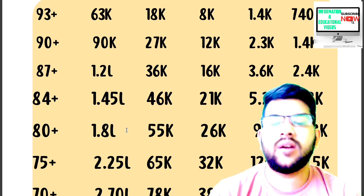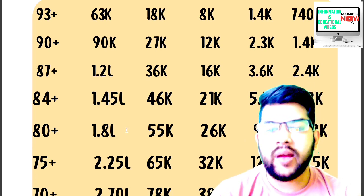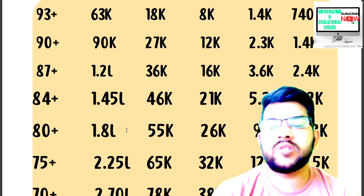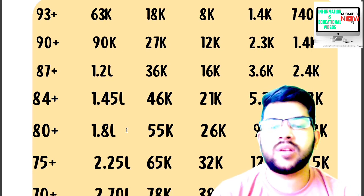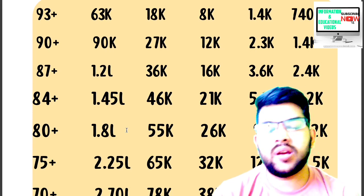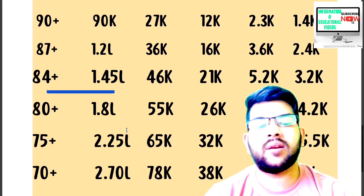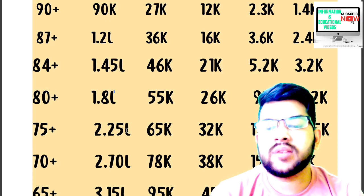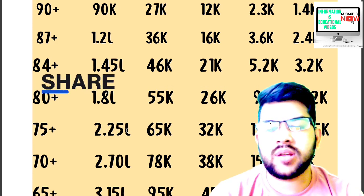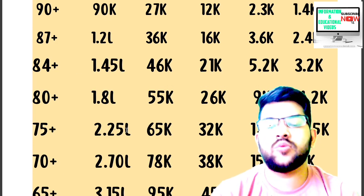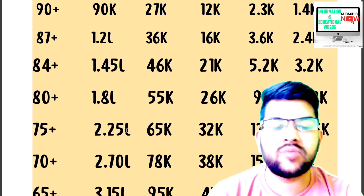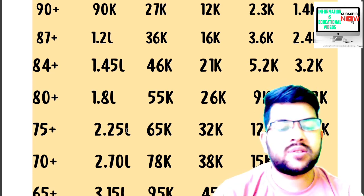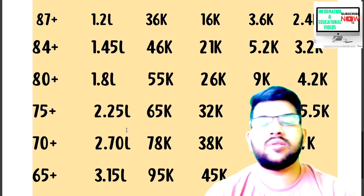For 70 plus percentile: CRL under 2.7 lakh, OBC 78,000, EWS 38,000, SC 15,000, ST 7,000. For 65 plus percentile: CRL under 3.15 lakh, OBC 95,000, EWS 45,000, SC 19,000, ST 9,000.